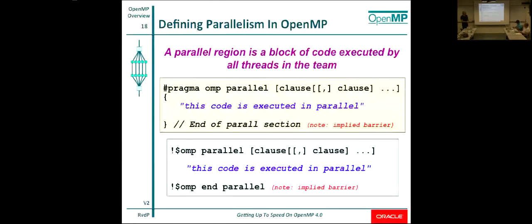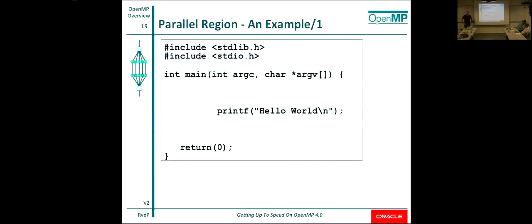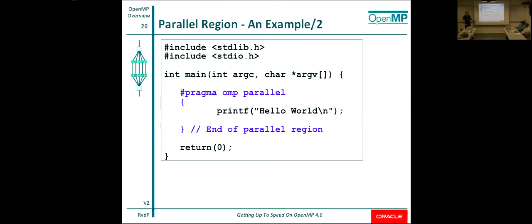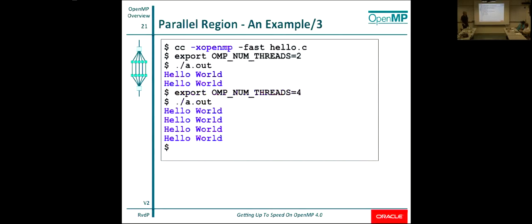Here's the Hello World example. In my main program I have a print statement, and all I need to do is put #pragma omp parallel with curly braces around it. Now I've said this will run on as many threads as I'd like. You compile, but you've got to check your compiler for the option to recognize those pragmas. For example, in GCC it's -fopenmp. In our Studio compiler, we use -xopenmp. Otherwise nothing will happen. Apparently the Cray compiler does it by default.